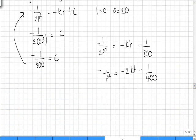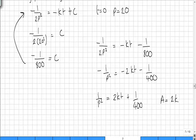If I just rearrange it slightly we're going to get 1 over p squared, multiplying through by minus 1, is equal to 2kt plus 1 over 400. Which means that our value of a is going to equal to k.